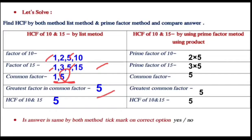So here we got greatest factor in common factor as 5. And that's why HCF of 10 and 15 is 5 by list method. Now using prime factor method using product.